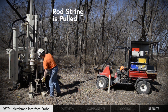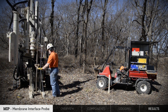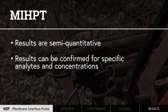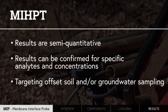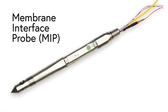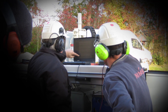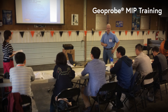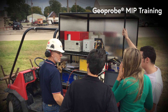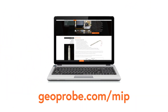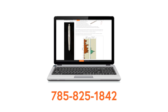Once logging is complete, the rod string can then be pulled. The MI-HPT results are semi-quantitative and can be confirmed for specific analytes and concentrations by targeted offset soil and/or groundwater sampling. The membrane interface probe from Geoprobe is used to locate where VOC contaminants are, determine relative concentration, and the type of soil they are located in. This is why the MI-HPT is very popular for guiding remediation projects. Geoprobe offers a detailed training program for MIP operators, including field contaminant logging exercises. For more information, visit geoprobe.com or call 785-825-1842.